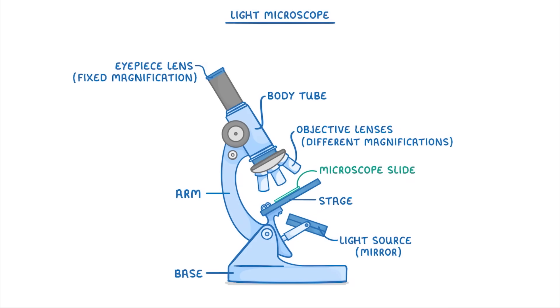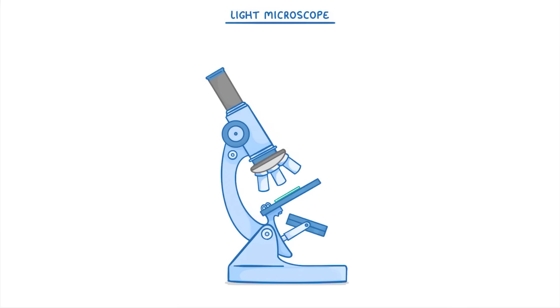Then the last things to notice are the body tube just here and finally the coarse and fine focusing knobs which we can turn to help us get the image in focus.